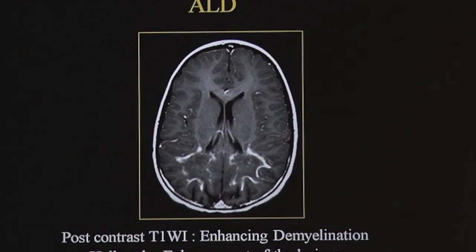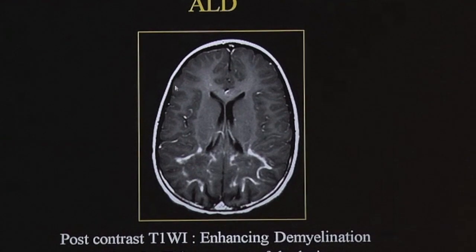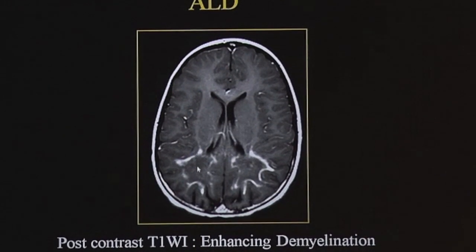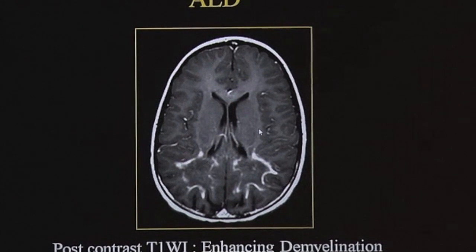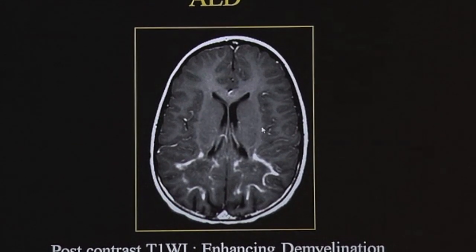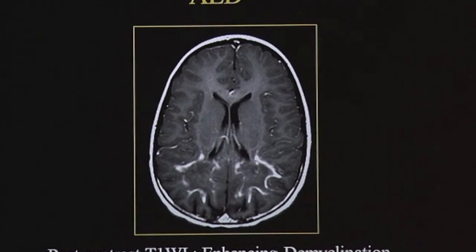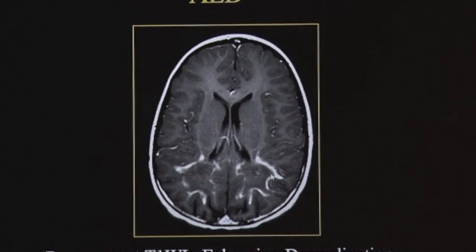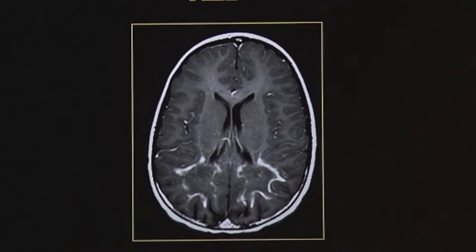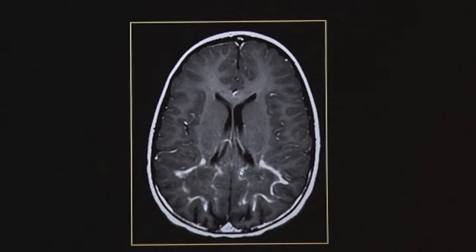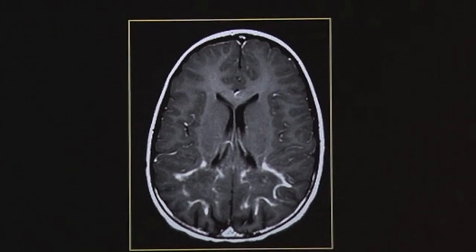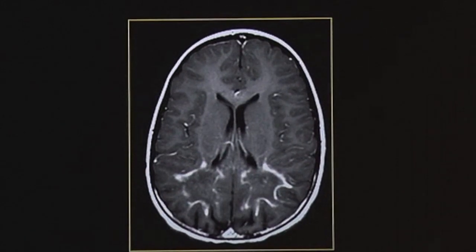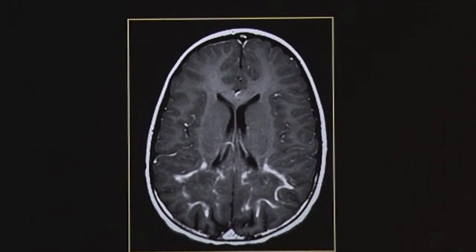This is one condition where you get enhancement at the interface between the affected and unaffected white matter — here is the affected white matter, here is the unaffected white matter, and at the interface of disease progression you see this enhancement. This is classic. There are only two conditions which show enhancement: one is adrenoleukodystrophy and the second is Alexander's disease.